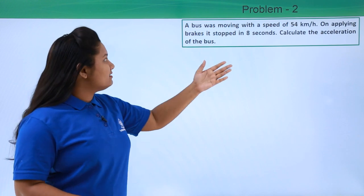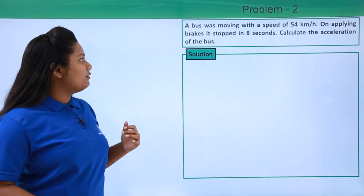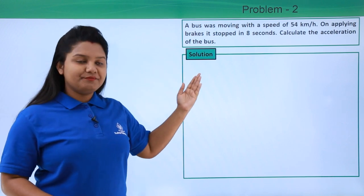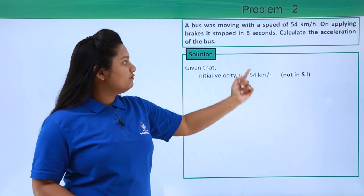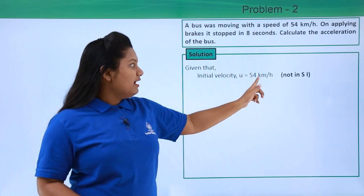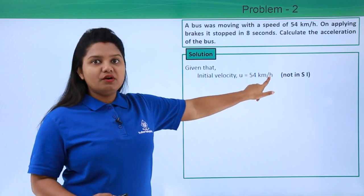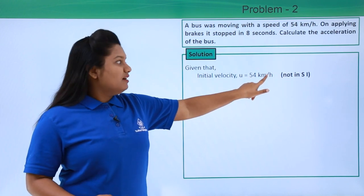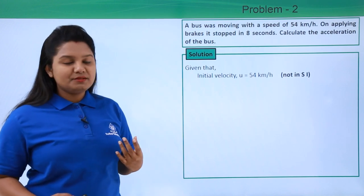Calculate the acceleration of the bus. First of all, let us write whatever is given in the question. The initial velocity of the body is 54 kilometers per hour, and we see that 54 kilometers per hour here is not SI unit. The SI unit of velocity is meters per second.